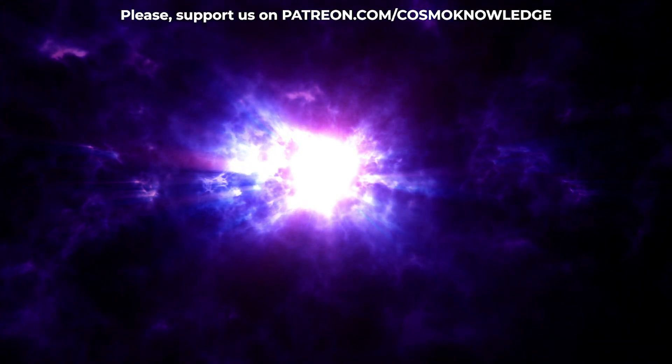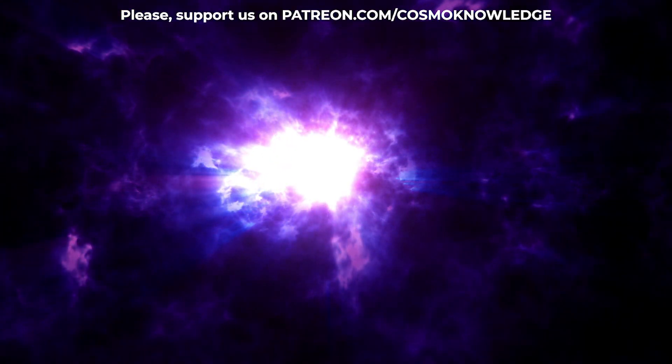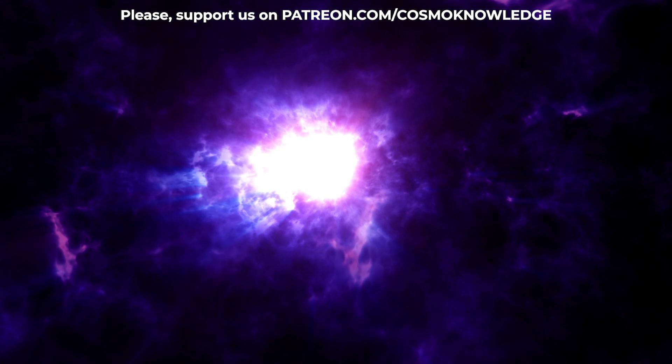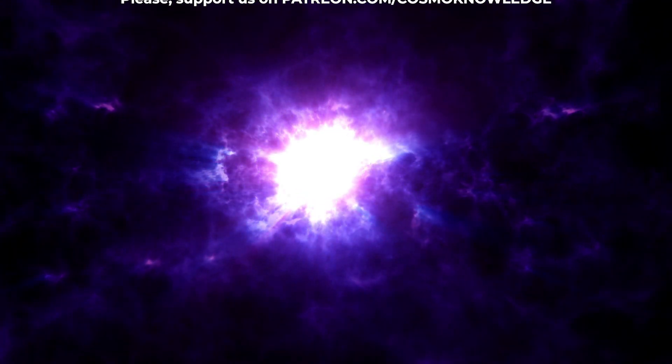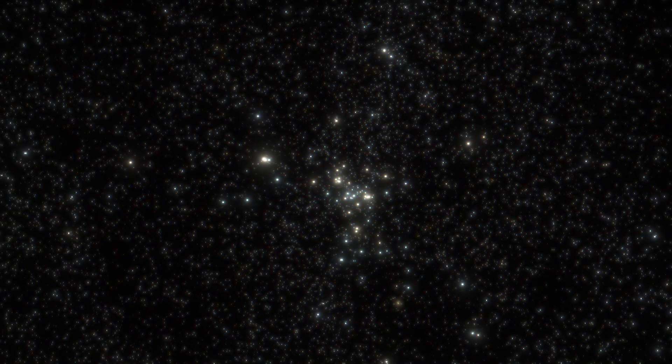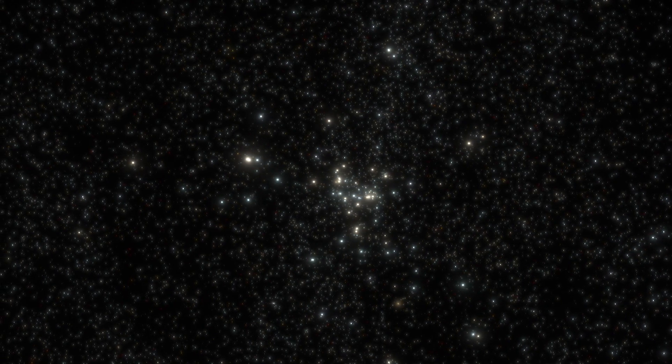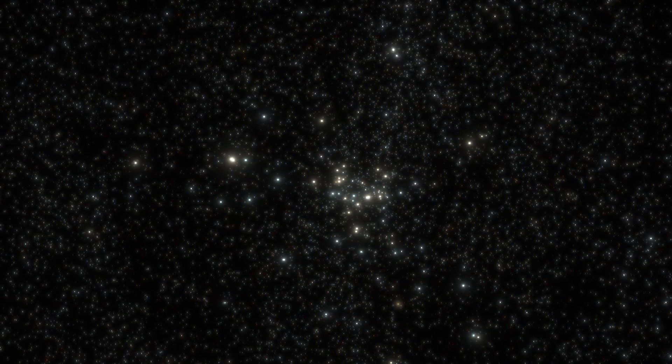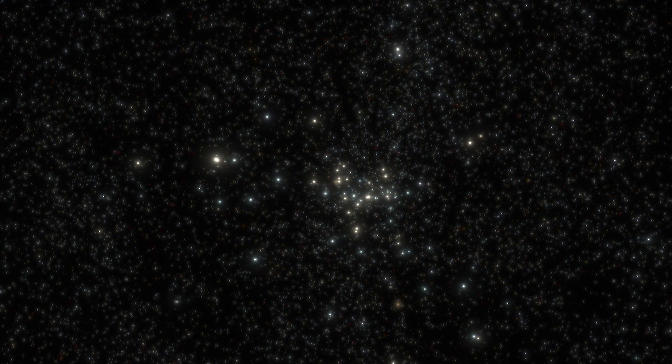Astronomers using ESO's Very Large Telescope have recently found six galaxies trapped in the web of a supermassive black hole when the universe was less than a billion years old. This is the first time scientists detect such a close grouping within the first billion years of the universe.